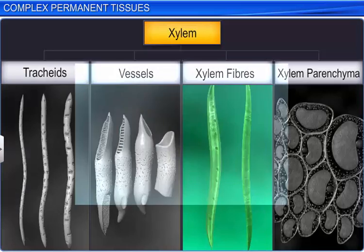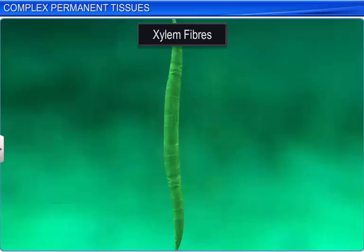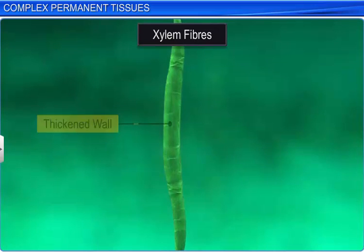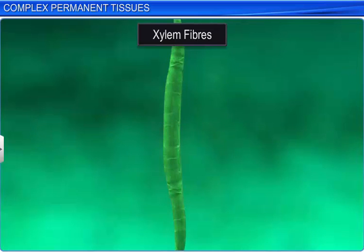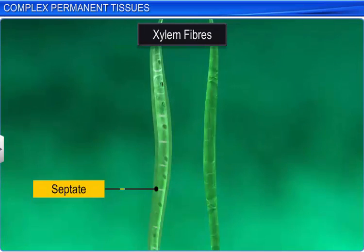Xylem fibers are sclerenchymatous fibers associated with the xylem. They have highly thickened walls and obliterated central lumens. These may be septate or aseptate.